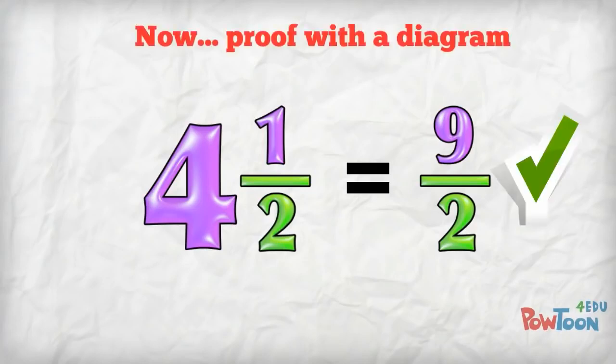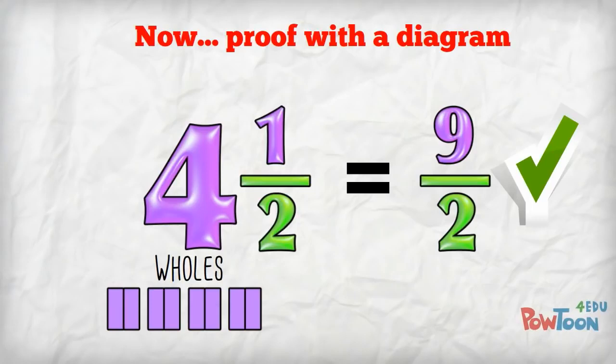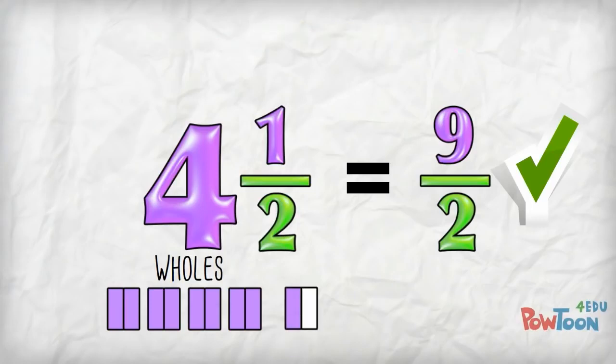And I can use a diagram to prove it. 4 wholes. Each whole is worth 2 parts, plus 1 more part out of 2. That's 9 parts out of 2. It's the same answer.